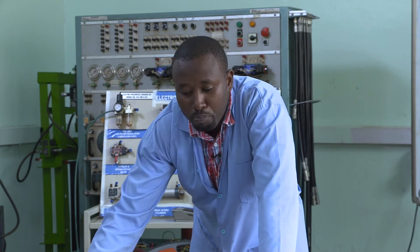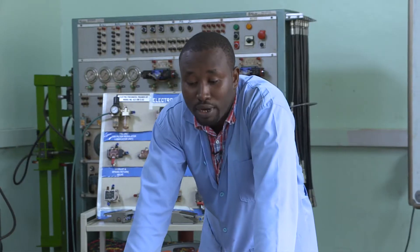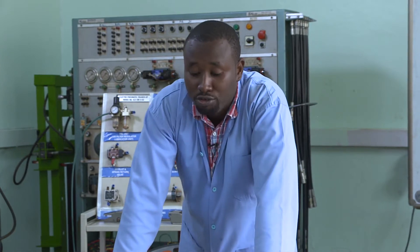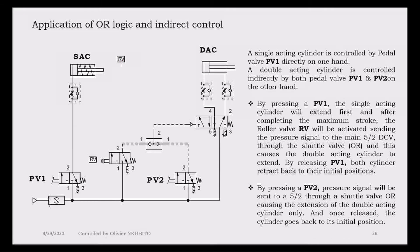In case we press on PV one, the single acting cylinder will extend, and after completing the end stroke by reaching the end forward stroke, it will activate another valve, which is a roller valve. That roller valve will also control the double acting cylinder indirectly. So PV one will control two cylinders — one directly and another indirectly — and PV two will only control the double acting cylinder. So let's connect it.